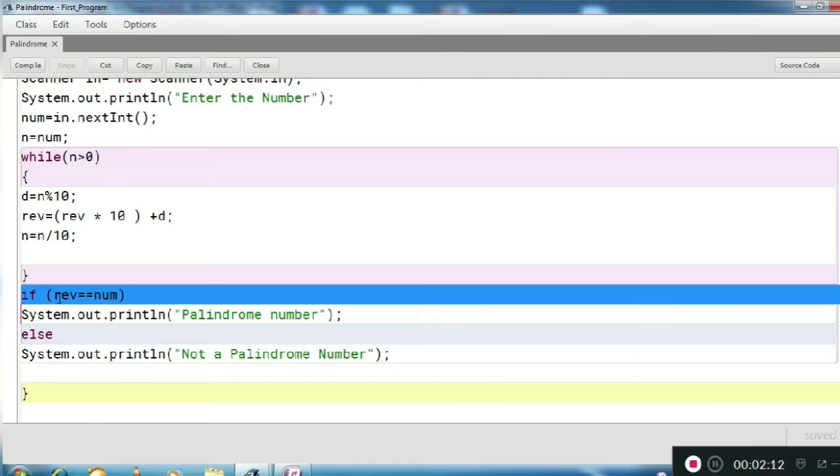If your reverse number equals your original number, then that is your palindrome, otherwise not a palindrome number. So let's see the logic, how it is working.